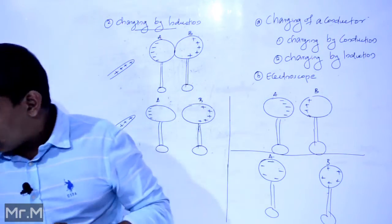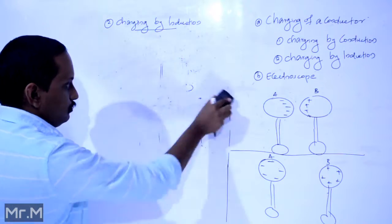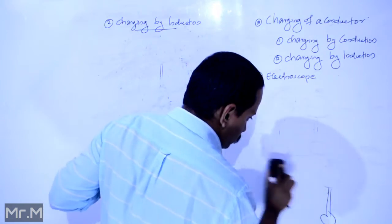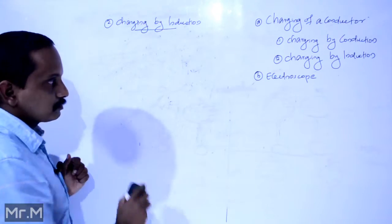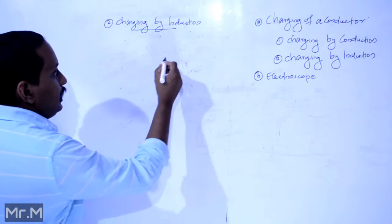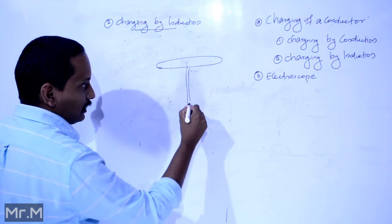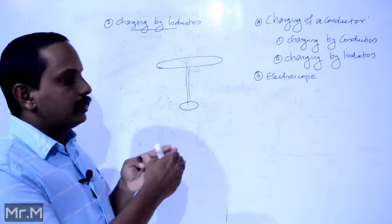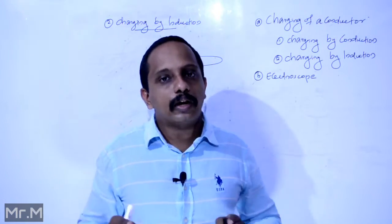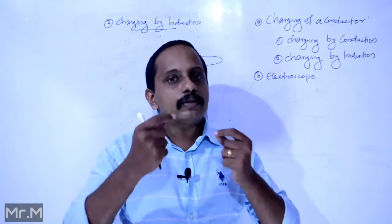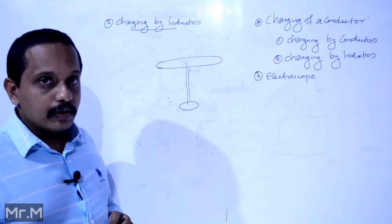Let's take a second example. We have an uncharged object placed on an insulating stand. The insulating stand ensures the object is isolated from the earth so that charge cannot flow to or from the ground. The object is neutralized and the insulating stand keeps it isolated.